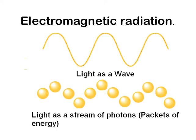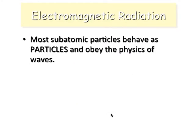We can view light as both a wave and as a stream of photons or packets of energy, this being a particle kind of idea. Each one of these little packets of energy is called a photon. Most subatomic particles behave as particles and they obey the physics of waves.